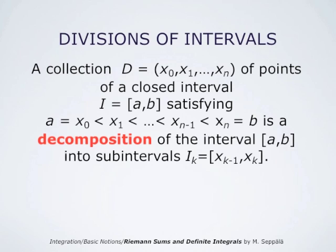We consider this interval from A to B as shown here, and we choose on this interval N plus 1 points: X0, X1, and so forth, Xn. They decompose this interval into N subintervals Ik. We consider these subintervals; we do not assume that they would have the same length.